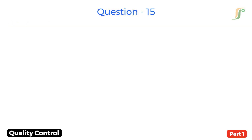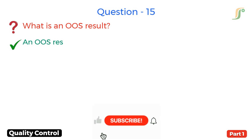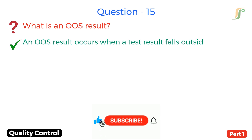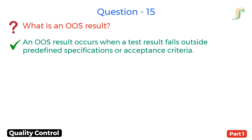Question 15. What is an OOS result? Answer. An OOS result occurs when a test result falls outside predefined specifications or acceptance criteria.